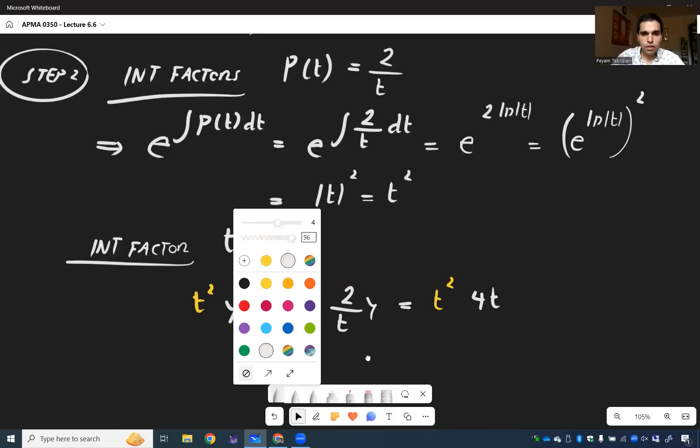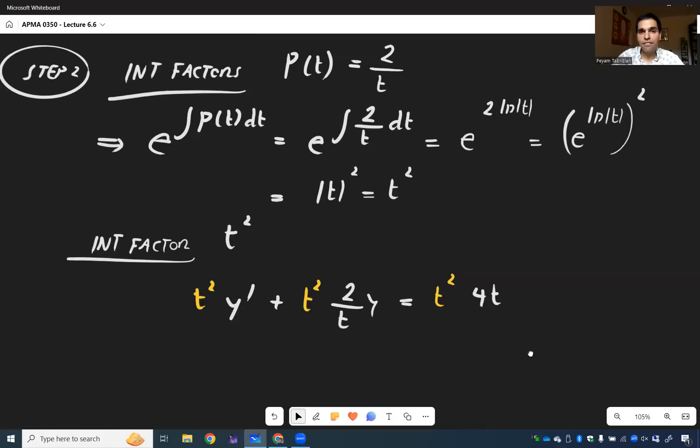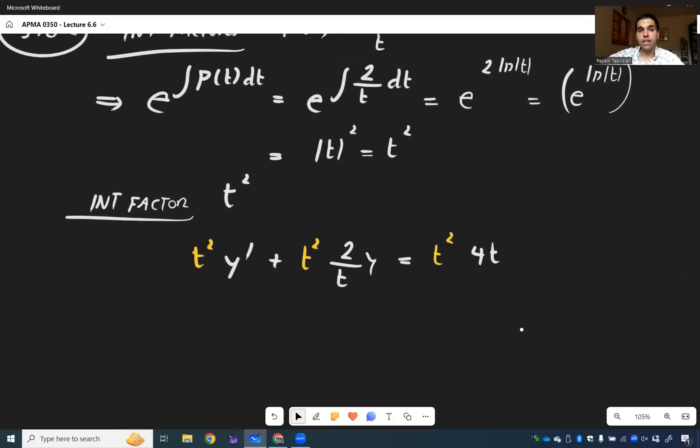And again, the beautiful thing is, for the left-hand side, you don't even need to do any algebra. By our proof of the integrating factors method, this automatically becomes t squared y prime. And that's because we want our integrating factor to be that way. We chose it so that it has this product rule form. And then the rest is just 4t cubed.